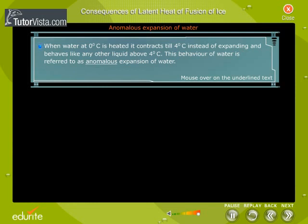When water at 0 degrees Celsius is heated, it contracts till 4 degrees Celsius instead of expanding, and behaves like any other liquid above 4 degrees Celsius. This behavior of water is referred to as anomalous expansion of water.